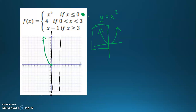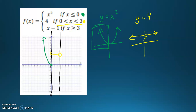My next piece I'll do in yellow. We've got y equals 4. If you just have a number, that's a flat horizontal line at that y value. I'm going to be graphing this line, but I only want to graph it when x is between zero and three. I'm going to go up to a height of four and go between zero and three. Because the piecewise function is defined as zero less than x less than three, and neither is less than or equal to, these are both going to be open circles.